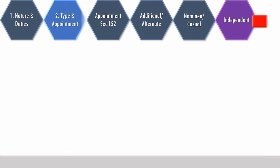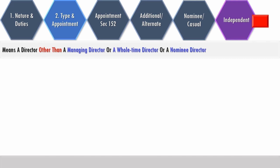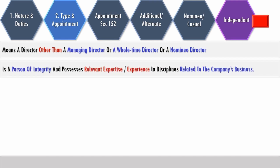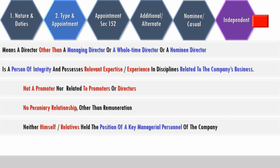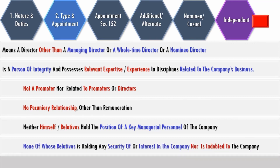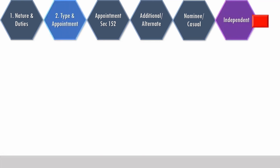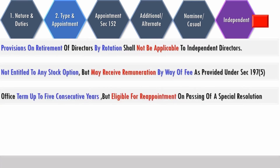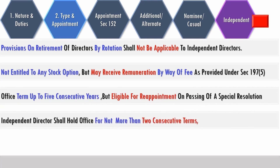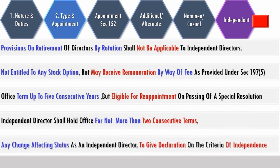The position of independent director is unique: they are not a managing director, whole-time director, nor a nominee director. They must be a person of integrity possessing relevant experience and expertise in disciplines related to the company's business, must not be a promoter nor related to promoters or directors, must have no pecuniary relationship other than remuneration, and neither themselves nor their relatives should hold a position of key managerial personnel or any security or interest in the company, nor be indebted to the company. An independent director is not subject to retirement by rotation, is not entitled to stock options, but may receive remuneration by way of fee. Their office is up to five consecutive years, eligible for reappointment on passing a special resolution, for not more than two consecutive terms. Any change affecting their status as an independent director requires a declaration confirming the criteria of independence.